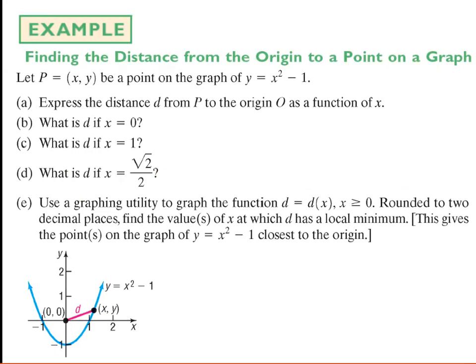Let's start off and look at the first example. In this first example, we're going to be finding the distance from the origin to a point on a graph. In this particular case, the graph we're looking at is y equals x squared minus 1. You can see that being graphed here — here's the parabola y equals x squared shifted down one unit.